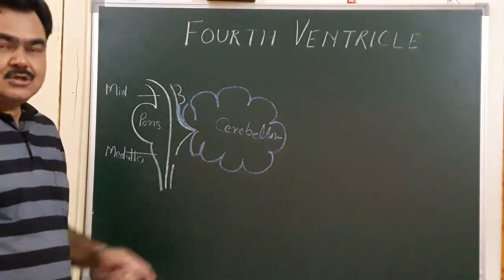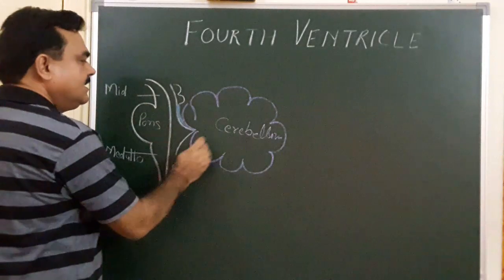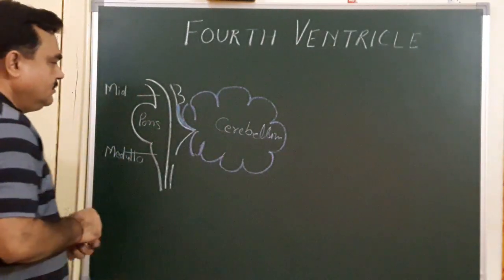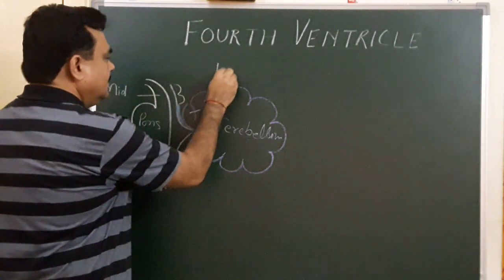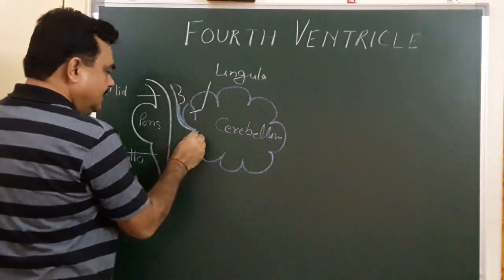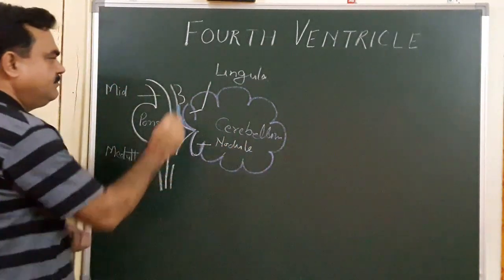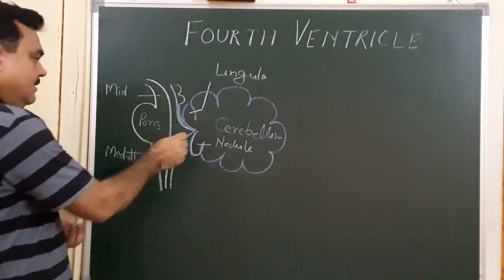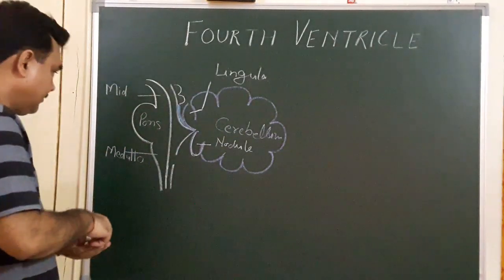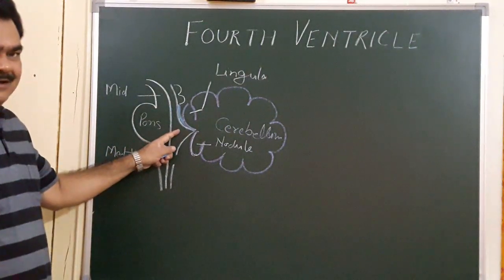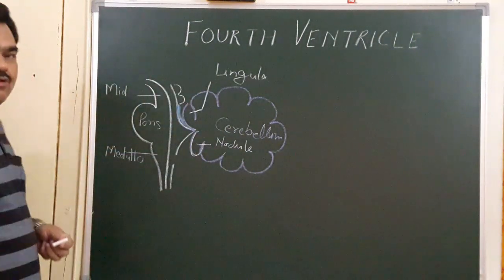This section passes through the vermis — this is a sagittal section passing through the vermis. Here is the cerebellum, this is the lingula, this is the nodule. This part is the vermis. Here is the position of the fourth ventricle in this diagram — from here to here, this part is the fourth ventricle.